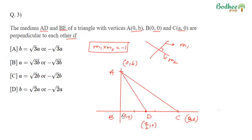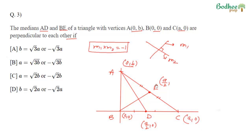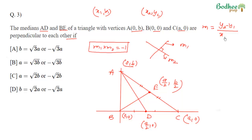For median BE, E is the midpoint of AC. The coordinates of E come out to be (A/2, B/2). To find slope, we use the formula (y2 − y1)/(x2 − x1). The slope M1 of AD works out to −2B/A, treating one point as (0, B) and the other as (A/2, 0).